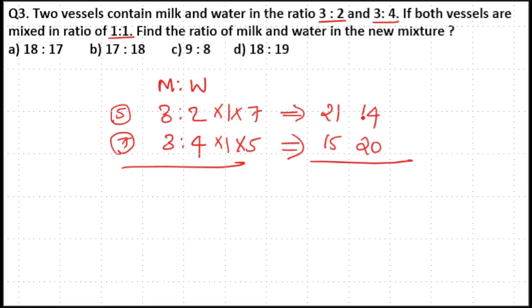Now you can check 21+14=35. Now both the parts are equal. You can directly add the ratios together.